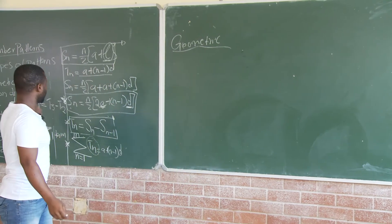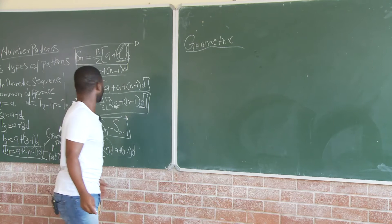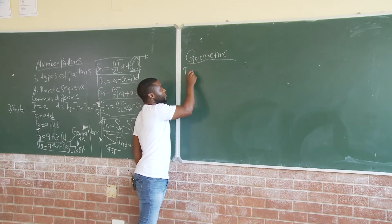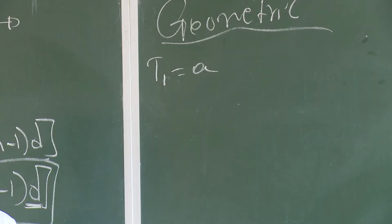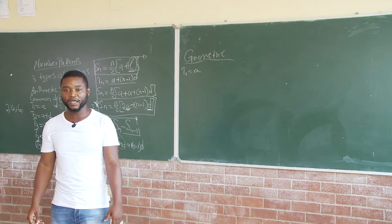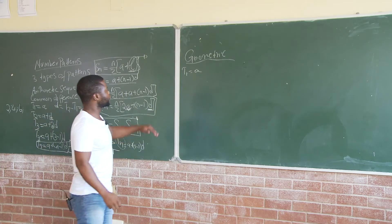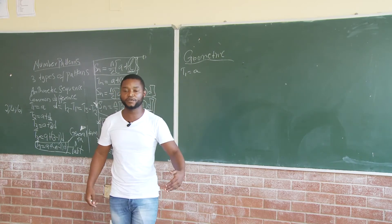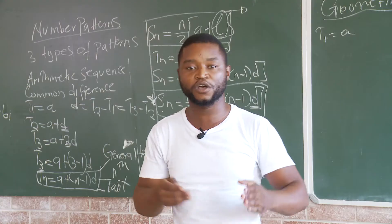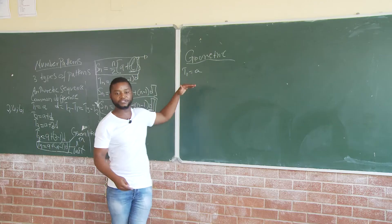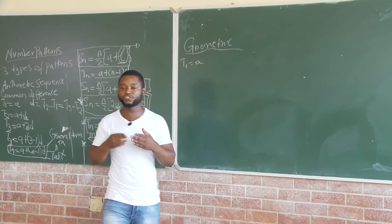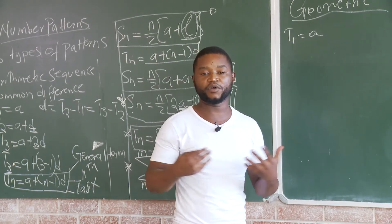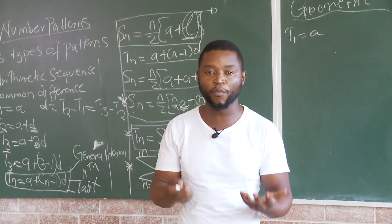Generally, we have found an arithmetic sequence. Generally, we refer to the first term as A. So, how do we identify that a sequence is Geometric? Remember that we have three different types of sequences. So, how do we know that this one in front of us is a Geometric Sequence? How do we identify the common ratio?